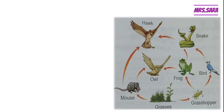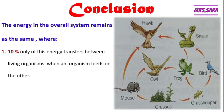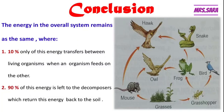From this picture, Primary 5, we can conclude that in any food web, the energy in the overall system remains the same. Only 10% of energy transfers between living organisms when an organism feeds on another. For example, only 10% of energy transfers from the snake to the hawk and from the frog to the snake. The remaining 90% of energy is left to the decomposers, which return that energy back to the soil.